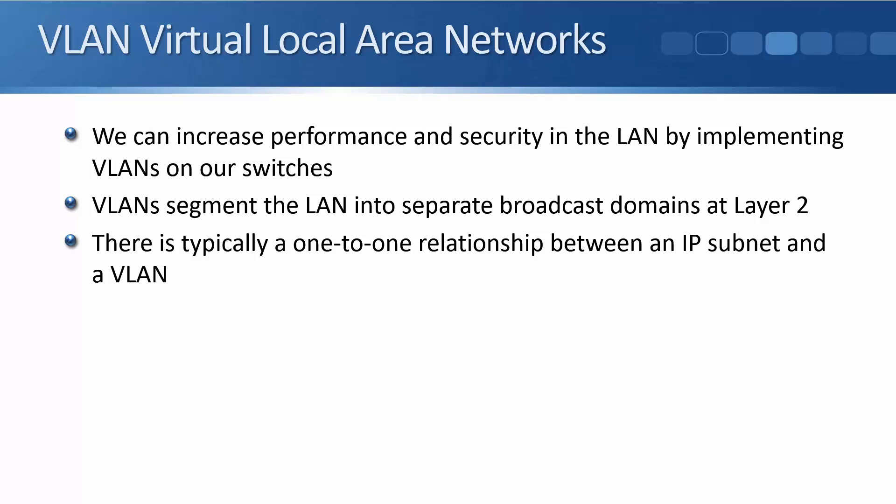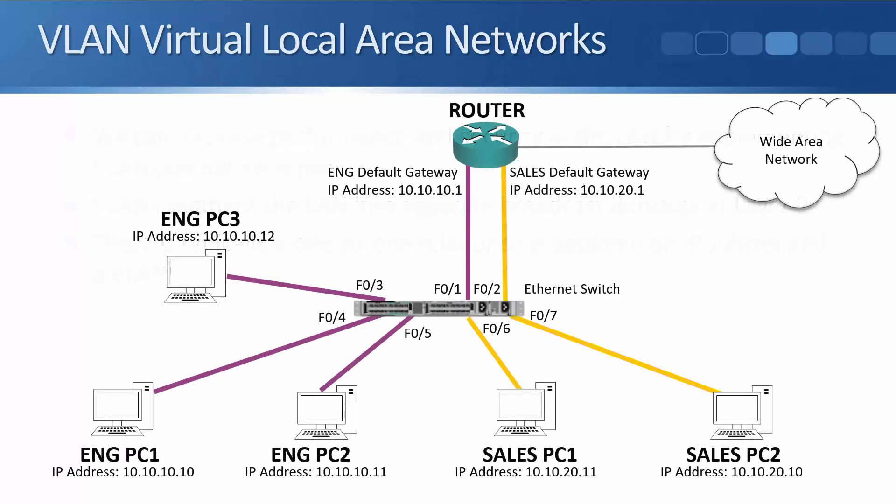VLANs — virtual local area networks — are the solution. We can increase performance and security in the LAN by implementing VLANs on our switches. VLANs segment the LAN into separate broadcast domains at layer 2. There is typically a one-to-one relationship between an IP subnet and a VLAN. In our example network, we create an engineering VLAN and a sales VLAN on the switch. All engineering PCs and the router interface for the engineering subnet go into the engineering VLAN, and all sales PCs and the router interface for the sales subnet go into the sales VLAN.